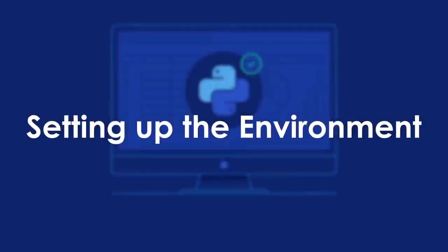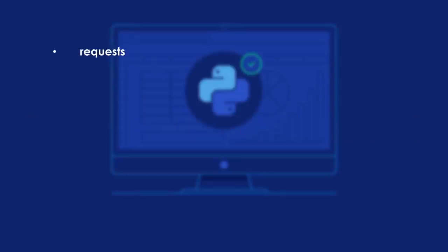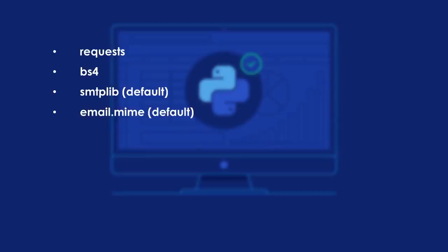In this video, we'll learn how to set up our Python environment with all the required packages. The packages we'll use are: requests for HTTP requests, BeautifulSoup for web scraping, smtplib for email authentication and transactions, email.mime for creating the email body, and datetime for accessing and manipulating date and time. smtplib, email.mime, and datetime come by default with Python, so we only need to install the two external libraries: requests and BeautifulSoup.